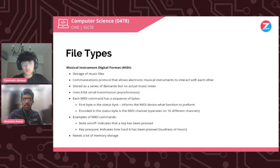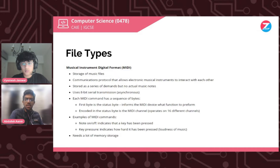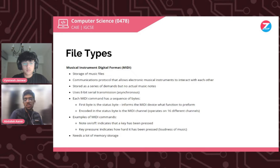Simplifying this: the first byte tells us the status of the MIDI device and what it has to do — for example, which section of the instrument to activate and what specific task to perform. The MIDI channel has 16 different channels. Examples of MIDI commands include playing a note on or off, and key pressure for how loud the music has to play. One problem with this type of file is it needs a lot of memory storage because many things are being stored in one file.